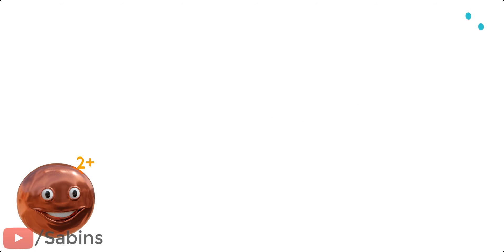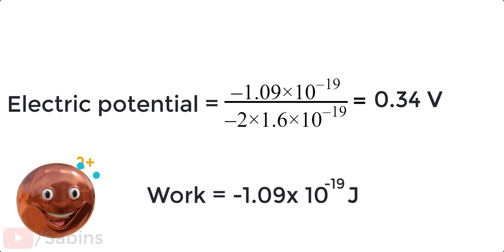However, if you move the electrons to the copper ion, since the copper ion is happy to accept them, the work you have to do will be negative. The electric potential of a copper ion can be deduced the same way.